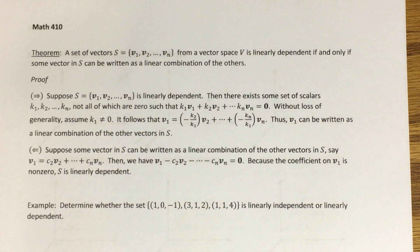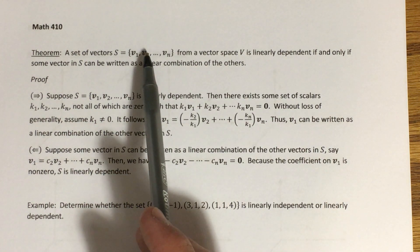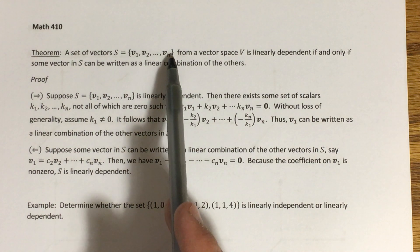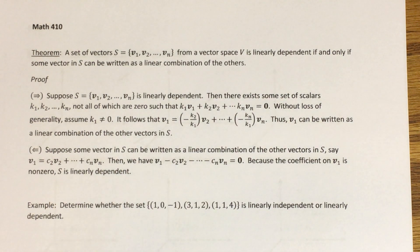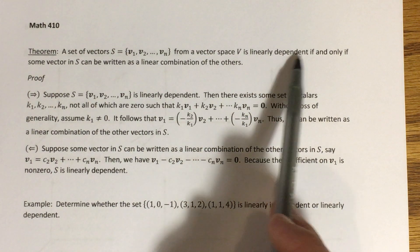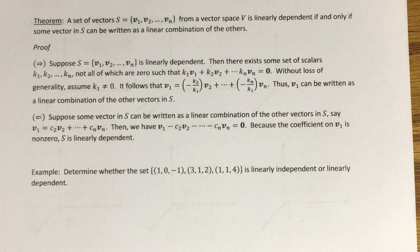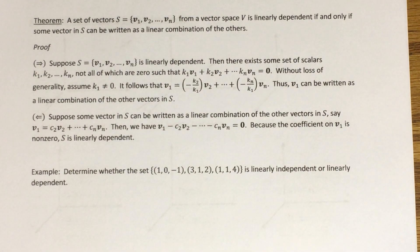What we're going to do here is generalize part B of that theorem to a set that doesn't necessarily contain exactly two vectors, but can contain any number of vectors. This theorem says that if we have a set S of vectors v1 through vn, and if any one of the vectors in this set can be written as a linear combination of the other vectors in that set, then the set is linearly dependent. In fact, this is an if and only if statement — this set is linearly dependent if and only if one of these vectors can be written as a linear combination of the others. Your book even defines linear dependence this way, though we've defined it a different but equivalent way.